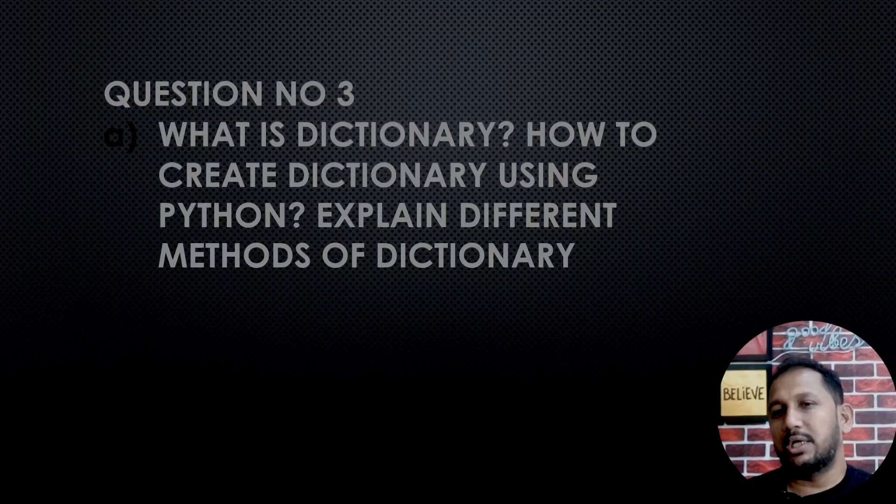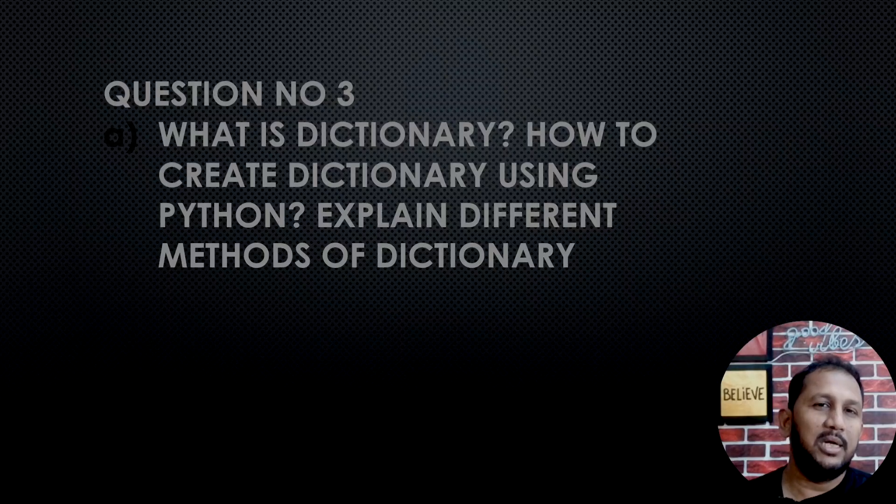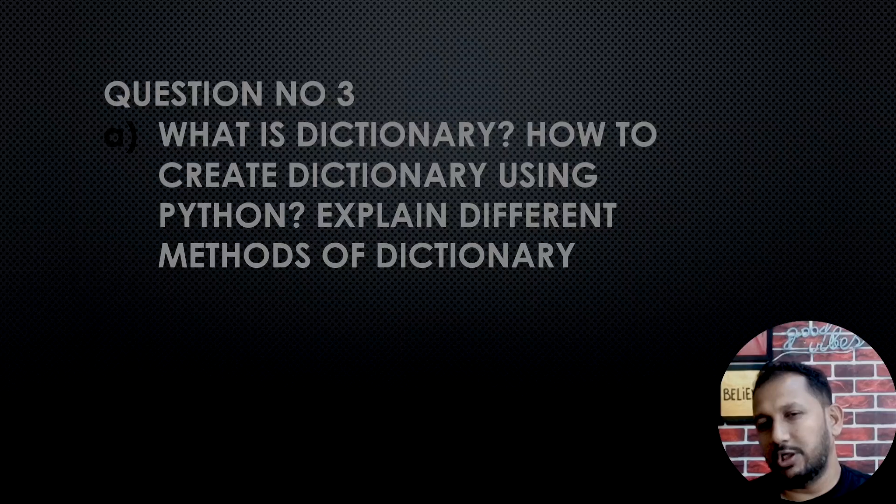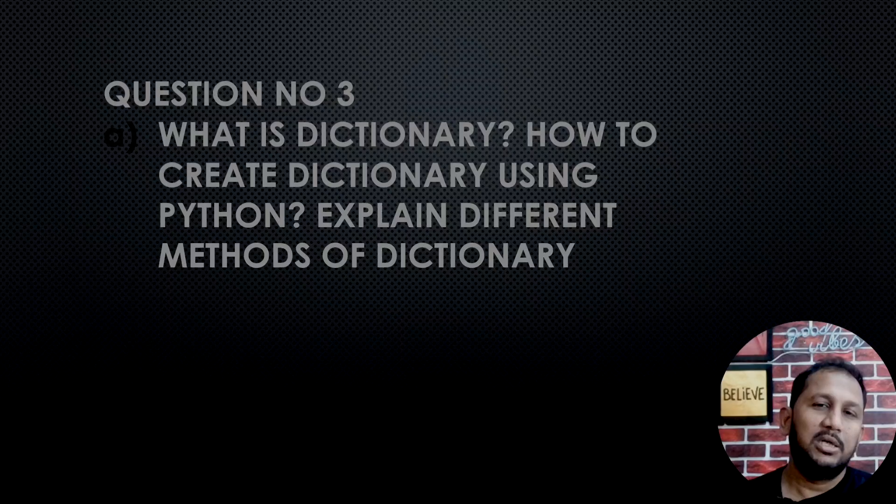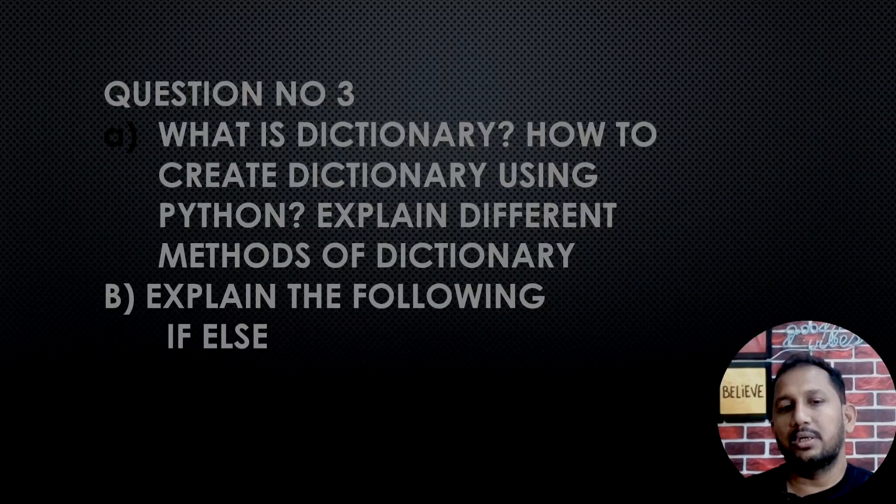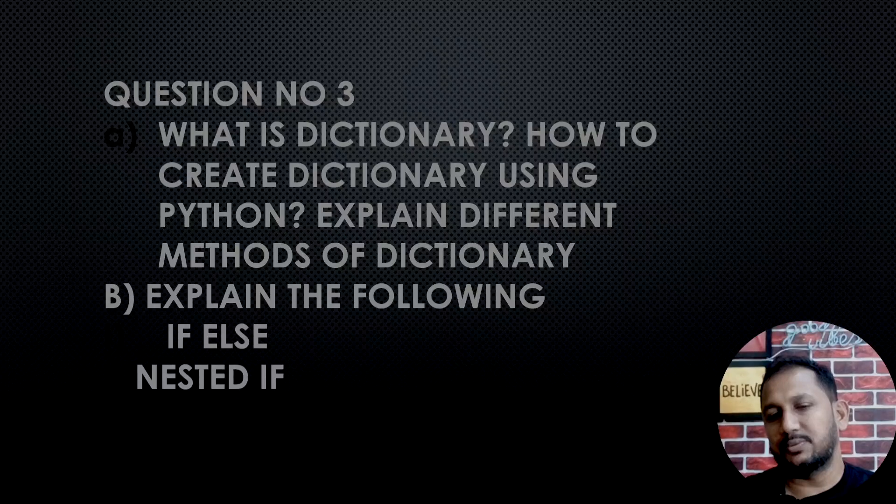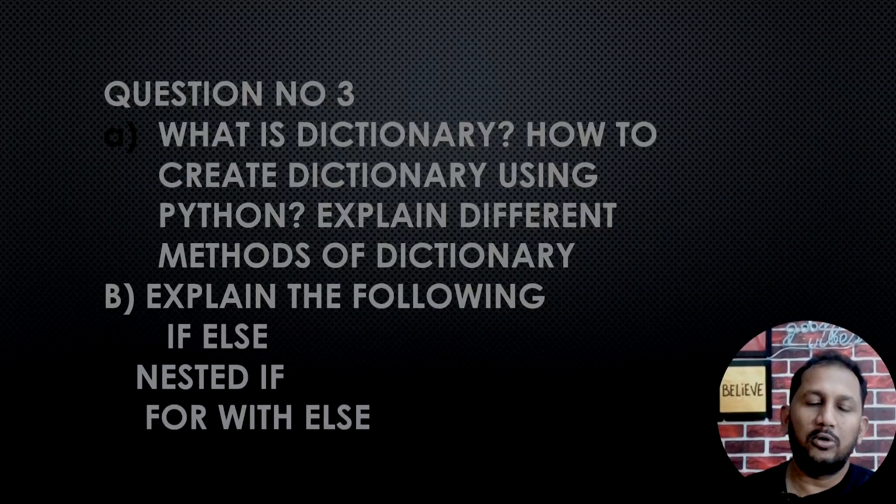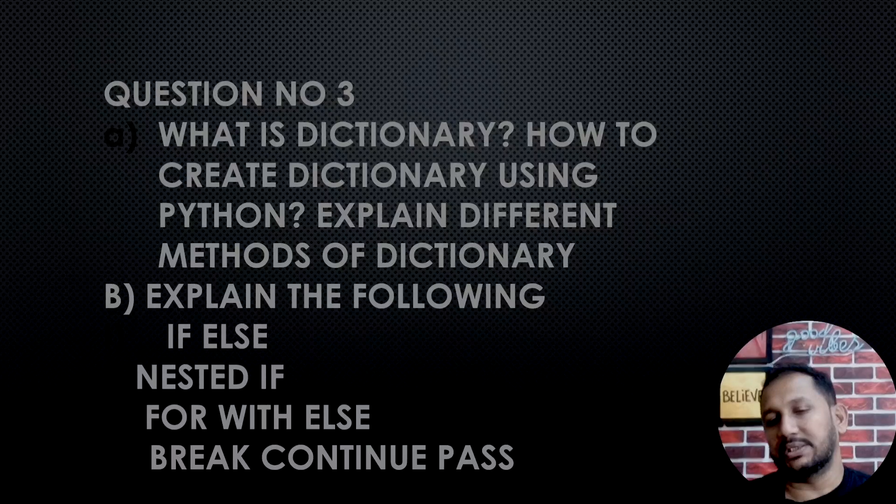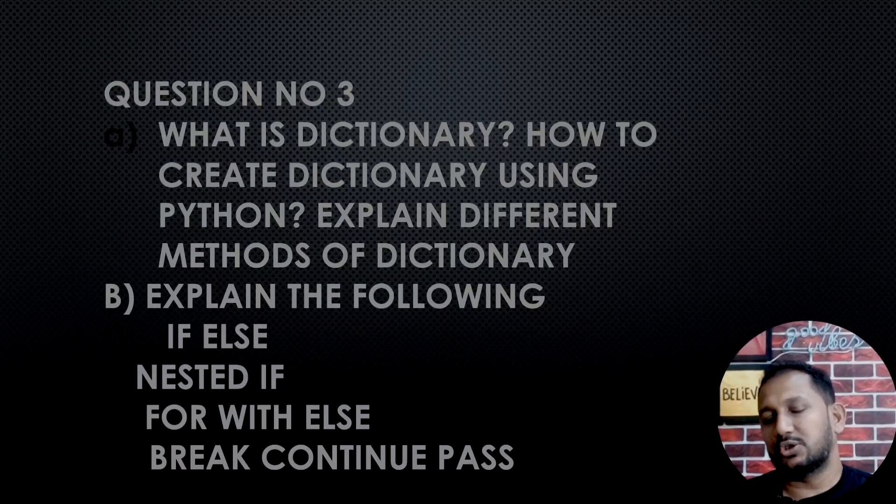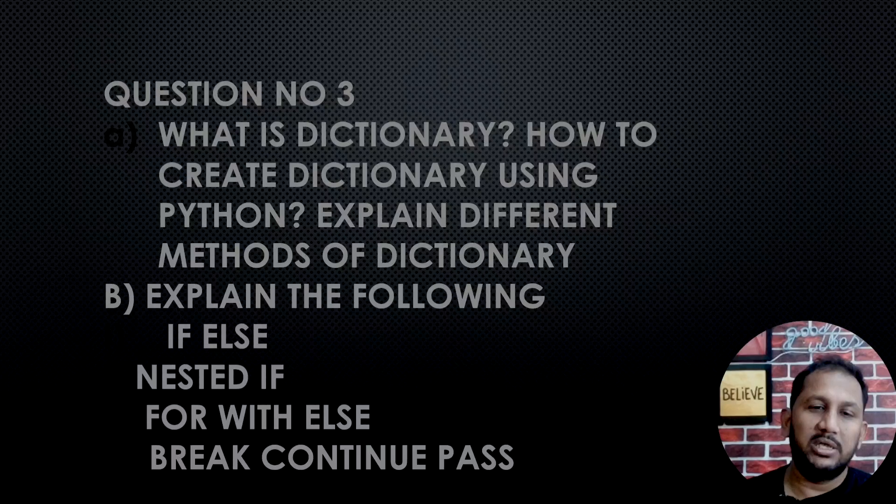Question number 3: What is dictionary? How to create a dictionary using Python? Explain different methods of dictionary. Next, a simple program. Explain the following: if-else as a short note with proper definition, syntax, flowchart, example. For loop with else, break, continue, pass - what is break, what is continue, and what is pass statement in Python.